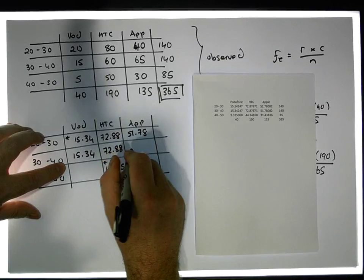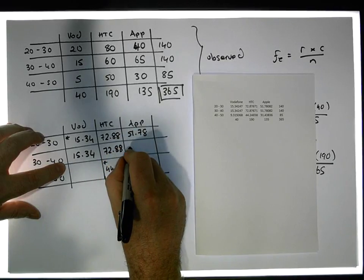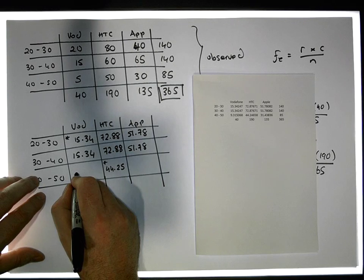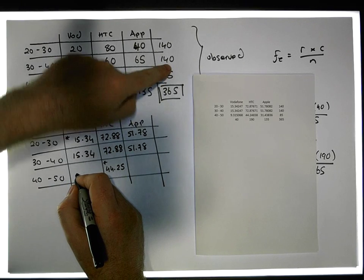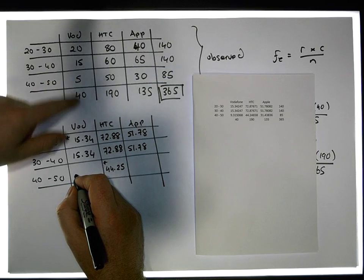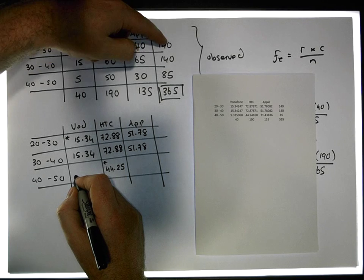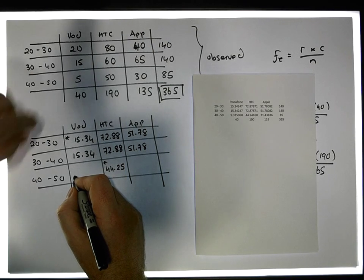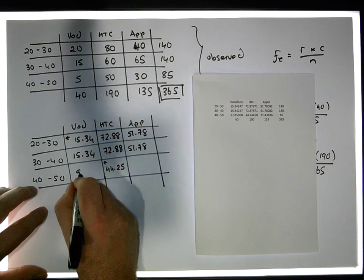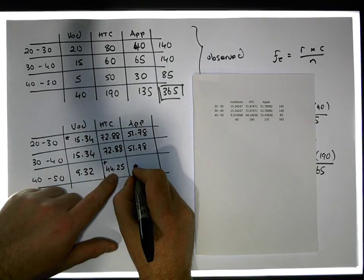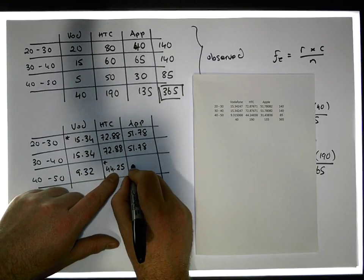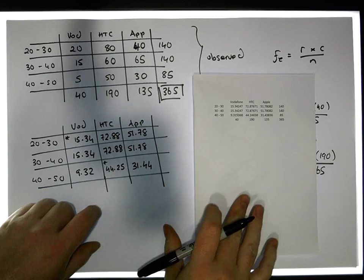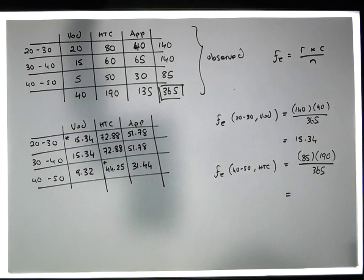I got 51.78 — that's unusual, but it's all relative to 140. These are actually going to be the same because it's 140 times the same thing. So we're getting the same: 9.32, 44.25 is perfect, and 21.44. These are expected frequencies.